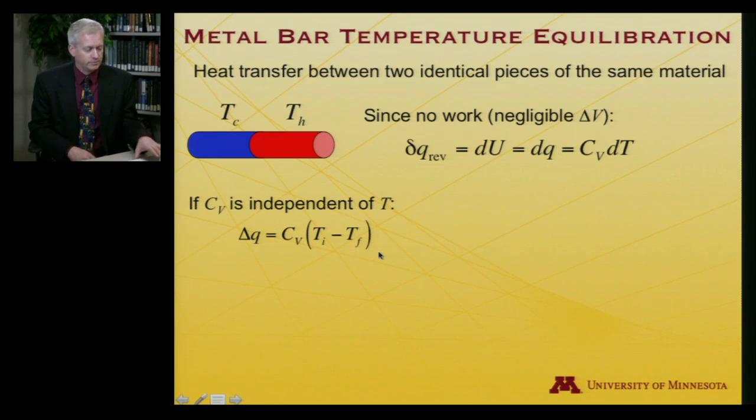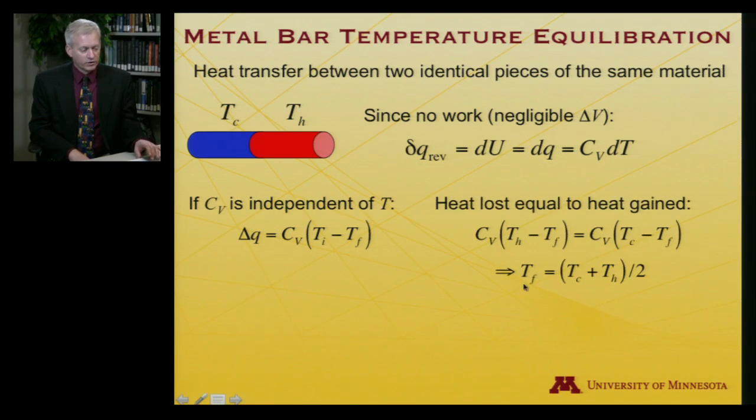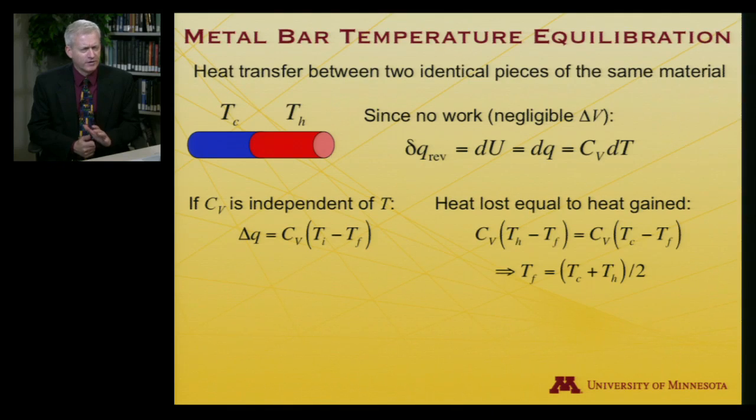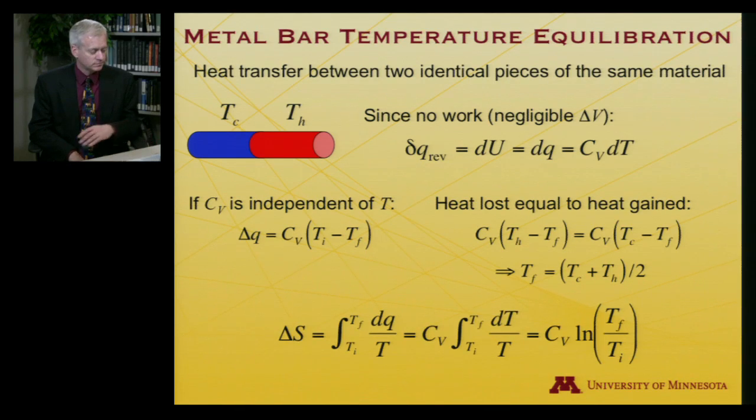So in that case, delta Q, the total heat transfer is going to be the heat capacity times the initial temperature minus the final temperature, whatever temperature I finish up at. Moreover, the heat lost has to be equal to the heat gained. So CV times the hot temperature minus the final temperature must be equal to CV times the cold temperature minus the final temperature. And that means that the final temperature here is not a rocket science equation. It means that it's got to be the average of the original two temperatures. And I suspect there might be a sign error here. I probably want to switch this around and make this negative. One is heat in, one is heat out. But I think the final conclusion that the average temperature is the final temperature is a conclusion that seems obvious.